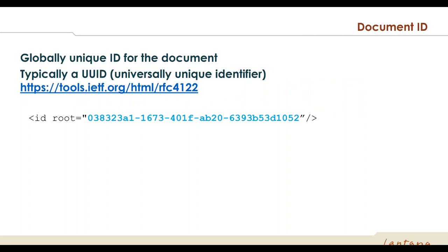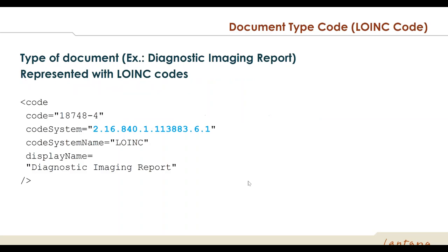Next is the document ID. Every CDA document needs a globally unique ID. This is important to ensure that when receiving documents from multiple provider organizations you can differentiate them and avoid overlapping IDs that could potentially have you replace one patient's record with another. The most common and recommended option is the use of a UUID or GUID — randomly generated IDs guaranteed to be globally unique. There's really no reason not to use one unless you already have an existing document ID mechanism in use internally.